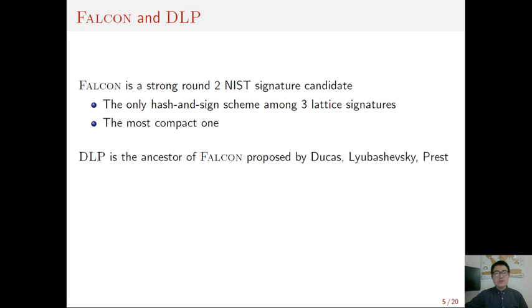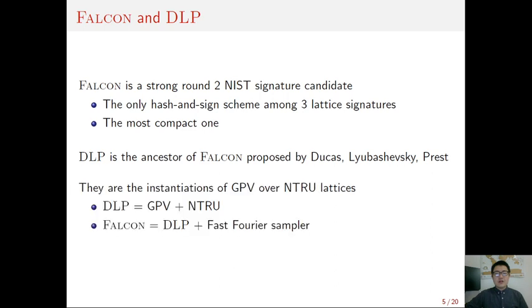And DLP is the ancestor of FALCON. It was proposed by Ducas, Lyubashevsky, and Prest. Both FALCON and DLP are instantiations of GPV over NTRU lattices. And on the basis of DLP, FALCON makes use of an improved Gaussian sampler called the fast Fourier sampler.